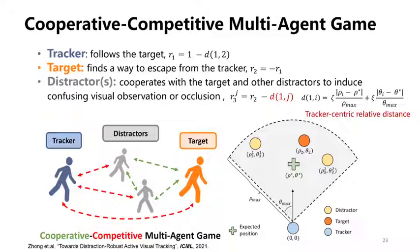In this mechanism, a target and multiple distractors form a collaborative team to play against a tracker and make it fail to follow. We design a reward structure to attribute the contribution of each distractor according to its distance from the center of the tracker's view — a distractor receives a high reward if it takes the center position of the tracker's view.